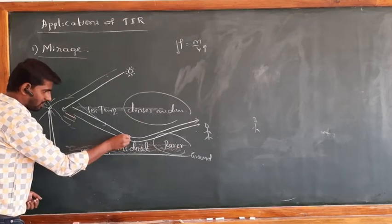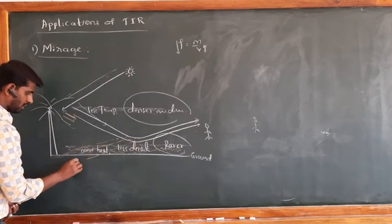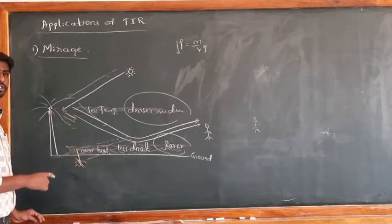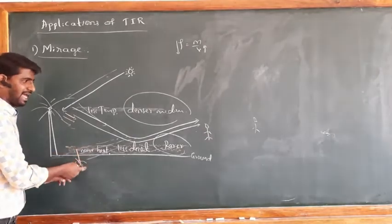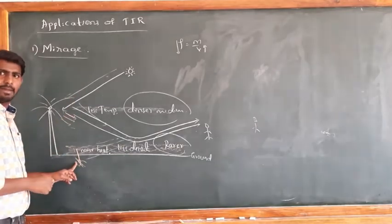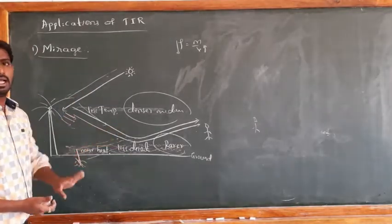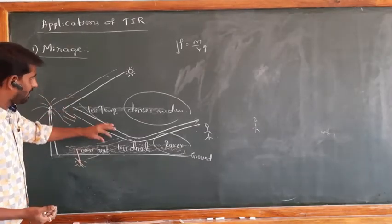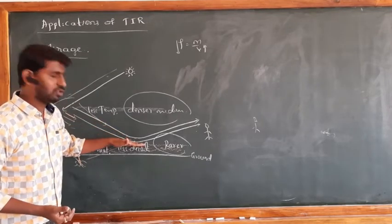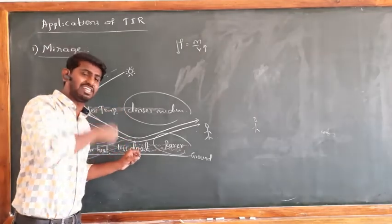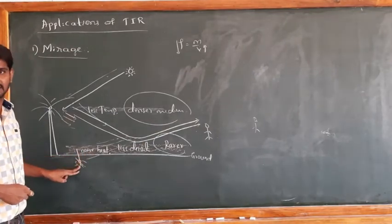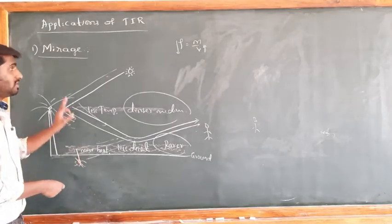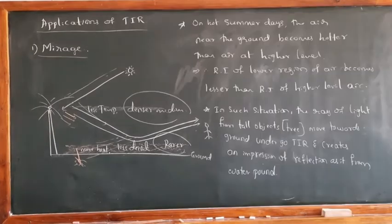After TIR, if we extend the rays back, an inverted image of the tree appears near the ground. The observer thinks there is a water pond, but in fact there is no water — it is just a game of light. The principle behind this is total internal reflection: the rays from the tree move from denser to rarer medium, undergo TIR, and those reflected rays reach our eye, creating the image. This is called a mirage.